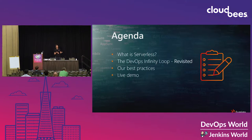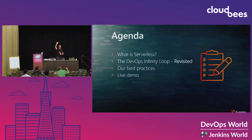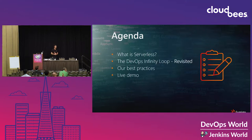We're going to talk about what serverless is for those who don't know, the DevOps infinity loop revisited with focus on serverless, our best practices, and a quick demo about how we use our own platform to test and monitor as part of our CI/CD pipeline. Quick question: how many of you are using serverless — AWS Lambda and other services — today in a production environment? And how many are planning to use that in the next year?